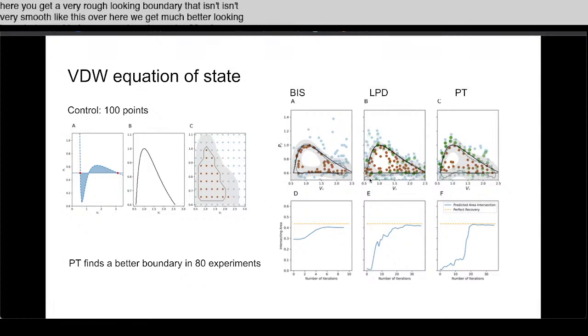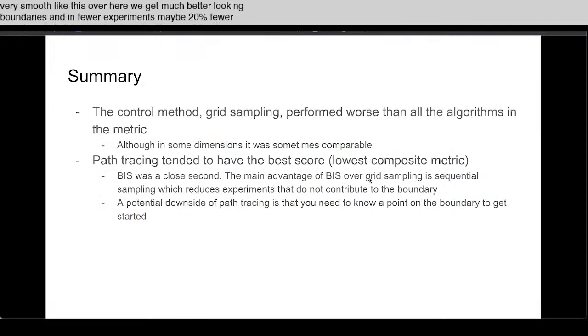In summary, the control method grid sampling is worse than all of the algorithms in the metric that I presented. Sometimes in some dimensions it's comparable, but in general it's always worse.